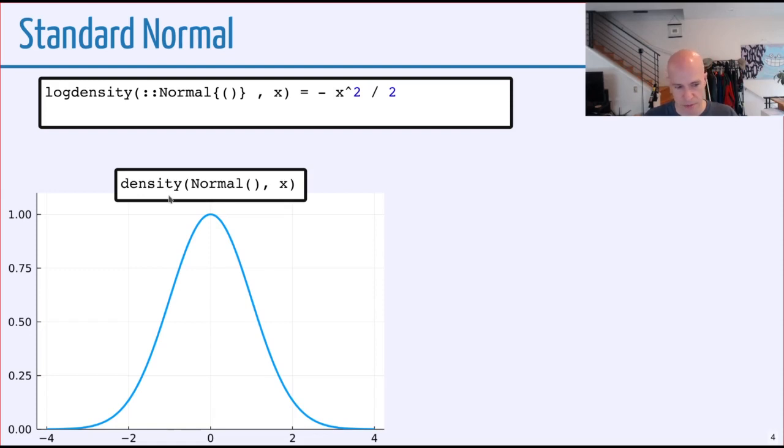The first objection might be, well, this isn't a density function because it doesn't integrate to 1. So that's true. In measure theory, we work in terms of different base measures. In this case, the base measure of a standard normal is not just Lebesgue measure, which would be in terms of the length of a given interval. Instead, we have a weight. This is a weighted Lebesgue measure that we use as the base measure. All of our computations are relative to this base measure.